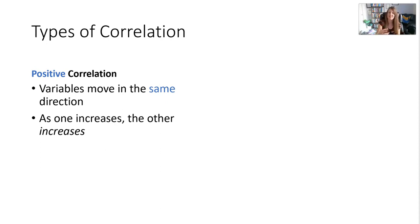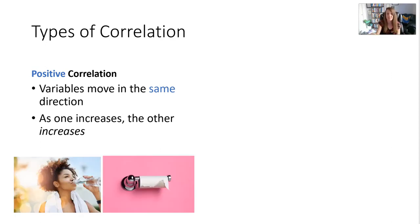When one decreases, the other also decreases. And with a negative correlation, they move in opposite direction. So let's look at some examples to make sense of this.